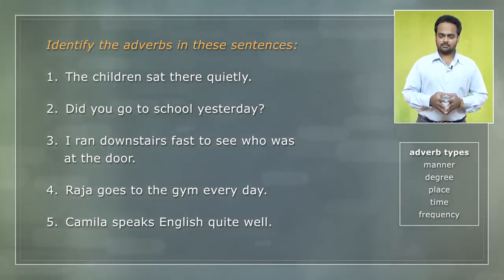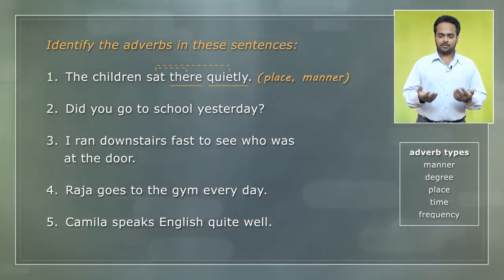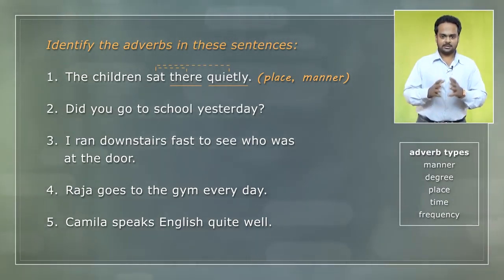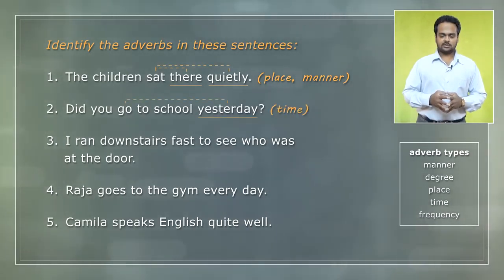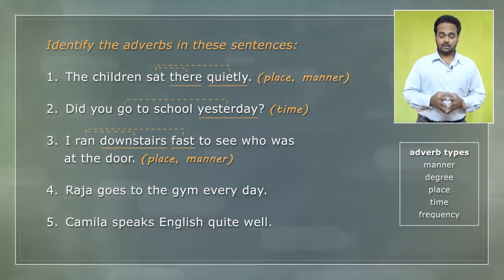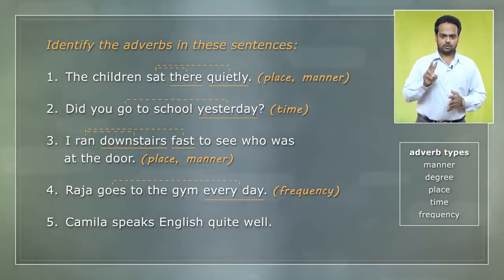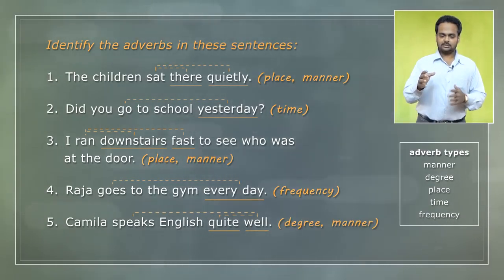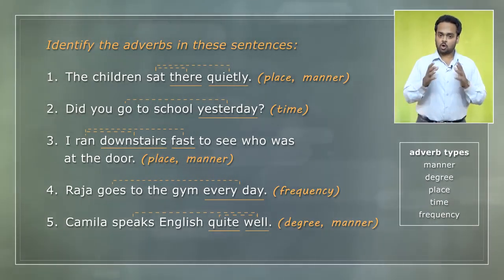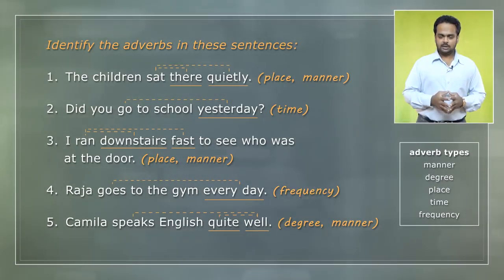How many adverbs did you identify? In the first sentence there are two adverbs – an adverb of place, and quietly, an adverb of manner, which says how the action happened. Both modify the verb sat. In number two, the adverb is yesterday, an adverb of time. In number three, there are again two adverbs – downstairs, an adverb of place, and fast, an adverb of manner. In sentence four, the adverb is every day, an adverb of frequency. And in number five, again two adverbs – well, an adverb of manner telling us that Camilla speaks English well, and the word quite, an adverb of degree that gives information about well. How well? Quite well – it's like saying very well.